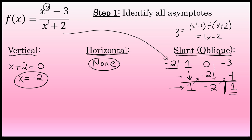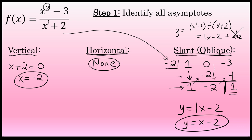The numbers in the bottom row represent the coefficients of the quotient: 1x minus 2. The remainder, written as a fraction over the original denominator x plus 2, is not important when identifying the slant asymptote. This slant asymptote has the equation y equals x minus 2. The slant asymptote occurs when the degree of the numerator is exactly 1 bigger than the degree of the denominator. You can find it by dividing x squared minus 3 by x plus 2 and ignoring the remainder — using synthetic division or polynomial long division.